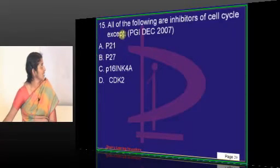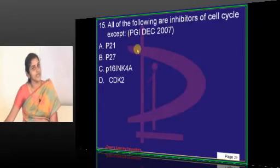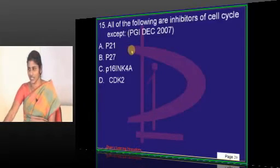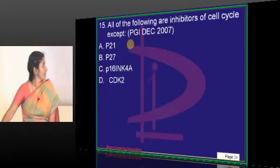So all these are not just inhibitors of cell cycle, they are also tumor suppressor genes. They are our guardian angels.